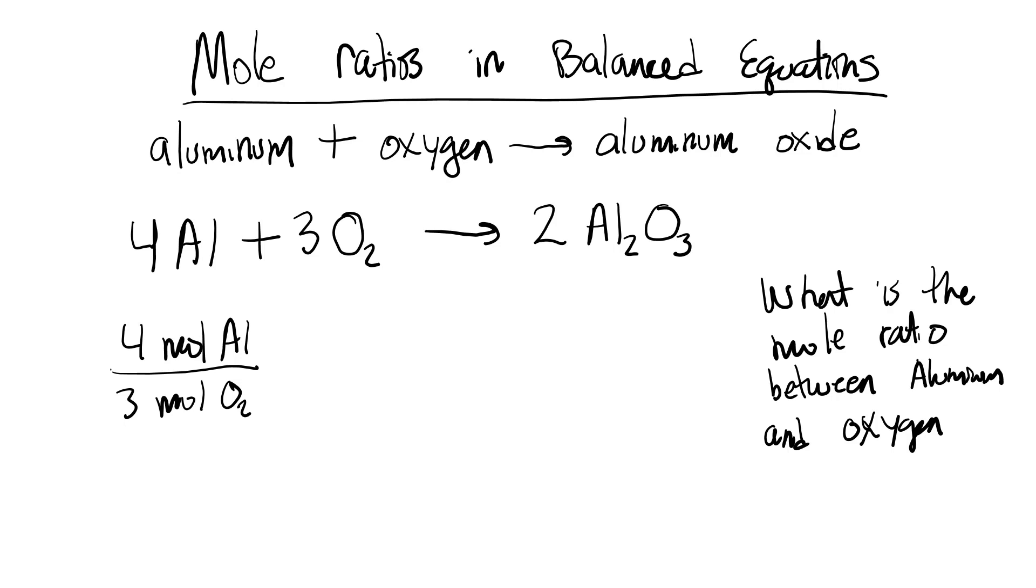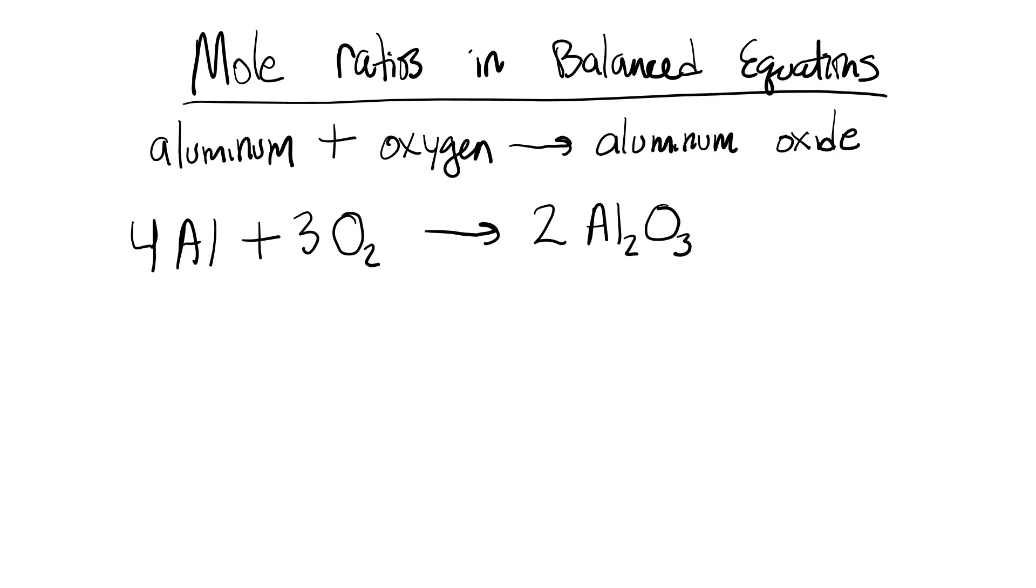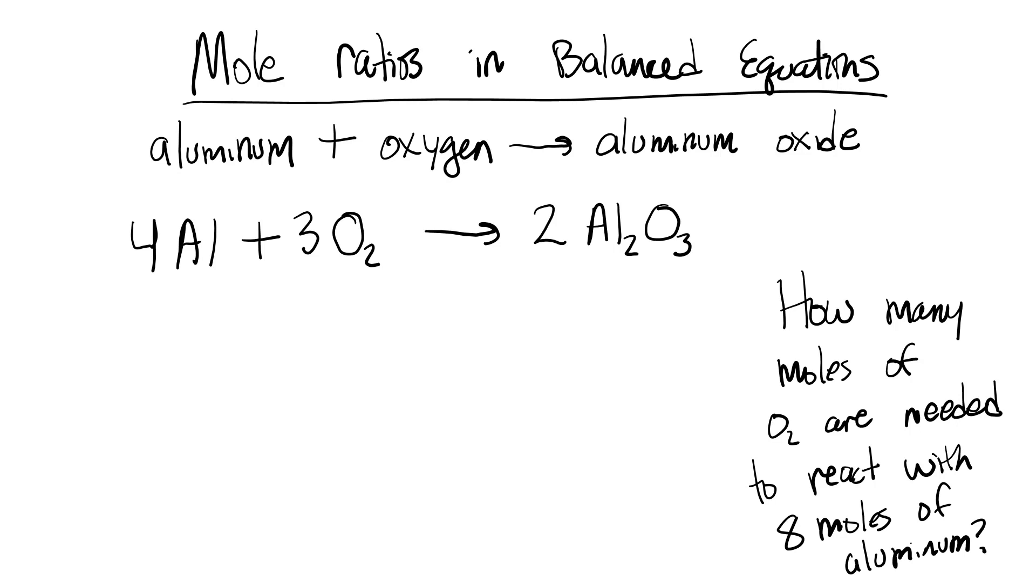Now how is this mole ratio useful to us? Well, sometimes we want to know how much of a substance we need to react with another substance. So let's change our question to: how many moles of O2 are needed to react with 8 moles of aluminum? Okay, now you might be able to look at this really quickly and just determine what it is because you know the ratio has to stay 4 to 3, but let's set it up formally so that when you have other questions or other values it will be easy for you to figure this out.